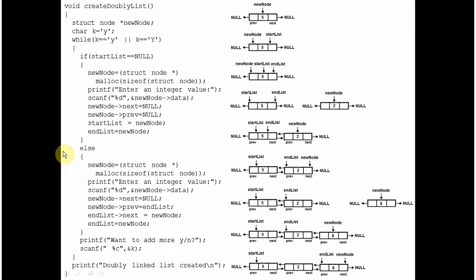The user is asked again, do you want to add more? Suppose the user presses Y again. A new node is created pointing to the newly created node. end_list is still pointing at the last node just created. The user is asked to enter the integer value — suppose they enter 8. The previous and next pointers are set to null. The previous pointer of new_node is set to point at end_list, and the next member of end_list is set to point at new_node. After that end_list is moved to point at new_node.